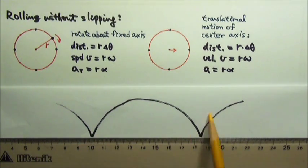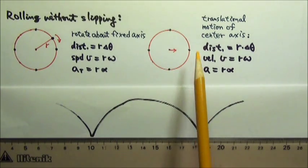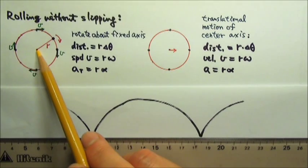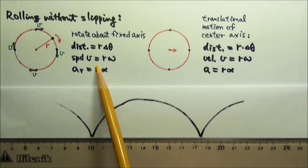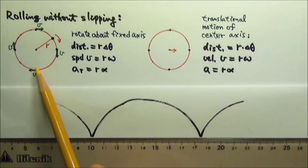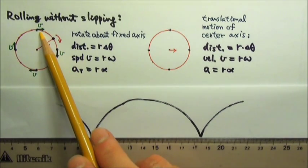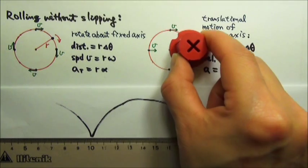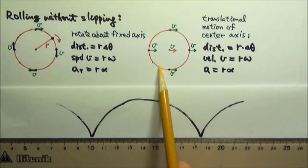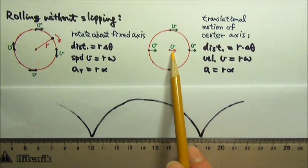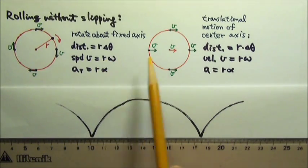Now let's compare the paths to the combination of these two motions for those four points on the rim. If the cap only rotates about a fixed center axis, all points on the rim would have the same speed, and their velocities would be clockwise and tangent to the circle. If the cap only does translational motion, all points on the cap would have the same velocity as its center, which has the same speed — r omega.